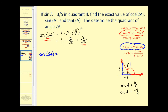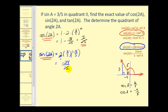Going back to sine of two A, we have two times sine A, which is three fifths, times cosine A, which is negative four fifths. Our denominator is twenty-five, and two times three times negative four gives us negative twenty-four. So the sine of two A is equal to negative twenty-four twenty-fifths.